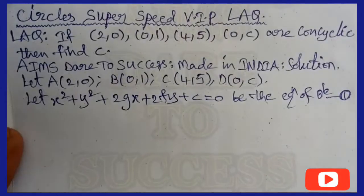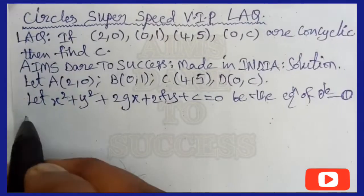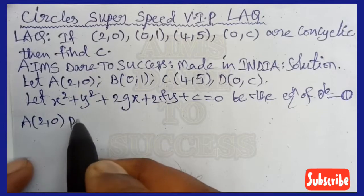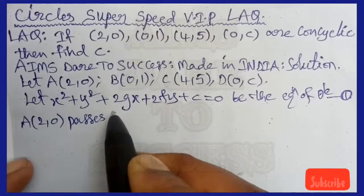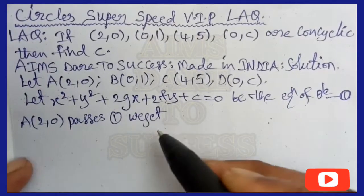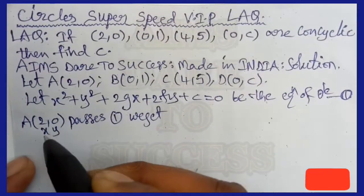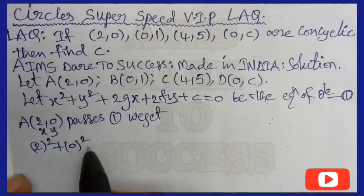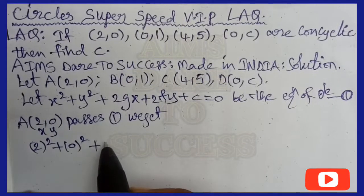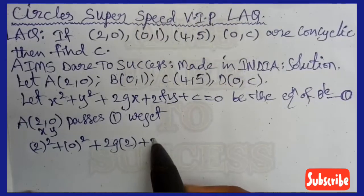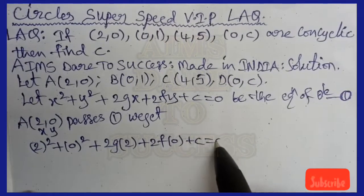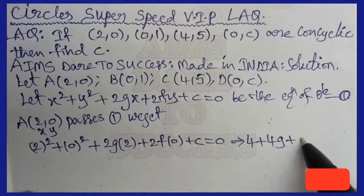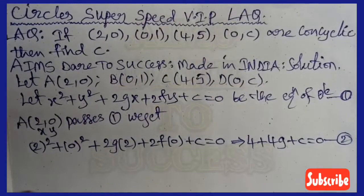Let it be Equation 1. First, point A(2,0) lies on Equation 1, so substitute x = 2, y = 0 into the equation. We get: 2² + 0² + 2g(2) + 2f(0) + c = 0, which gives 4 + 0 + 4g + 0 + c = 0. Let this be Equation 2.